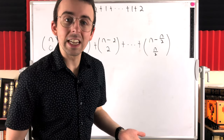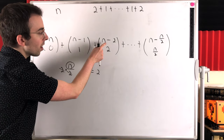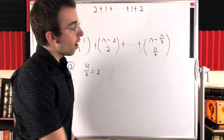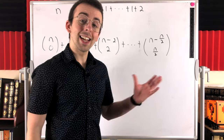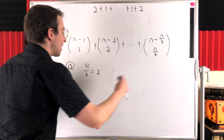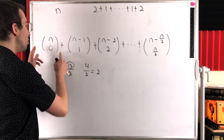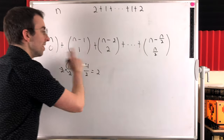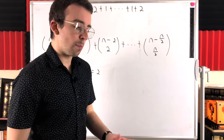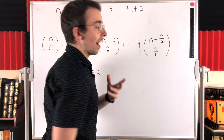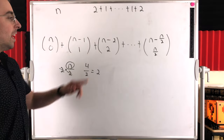For the number 14, for example, it would be 14 choose 0 plus 13 choose 1 plus 12 choose 2, and so on, all the way up to 14 minus 7, which is 7, choose 7. That's where the sum would stop. That counts all possible ways we could write 14 as an ordered sum of 1s and 2s, where each term separately counts the number of ways for a different number of copies of 2.